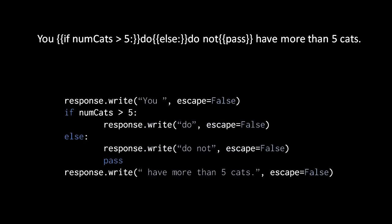This is the end result. Notice that without the pass statement, Web2Py wouldn't know whether or not the last response.write line is supposed to be part of the else block or not. If we didn't include this pass statement, the view would be no good because the code would be ambiguous and Web2Py would give us an error.